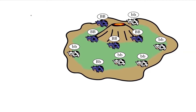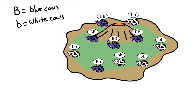Let's use a simple example to understand genetic drift. Let's say we have an island full of cows and we're going to focus on one gene — cow color. There are two alleles: the dominant allele big B, which causes a blue cow, and the recessive allele little b, which causes a white cow. We represent the dominant allele frequency with P, and since there are nine dominant alleles out of 20 alleles total, the allelic frequency for the dominant allele is 0.45 or 45%.